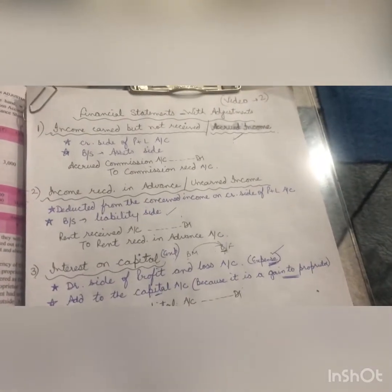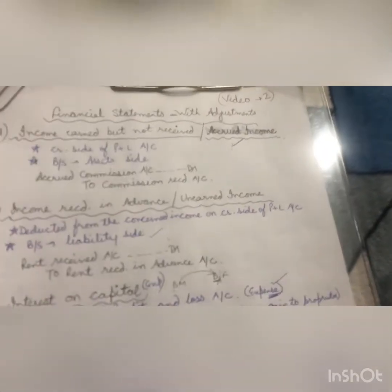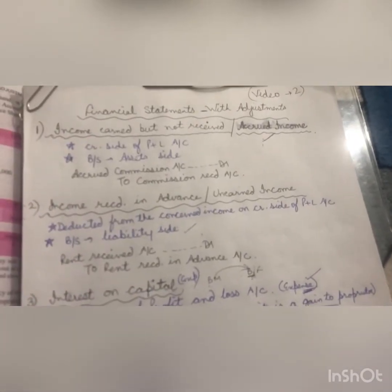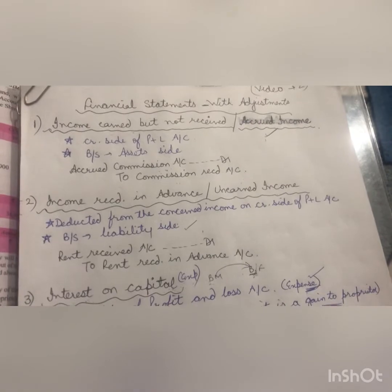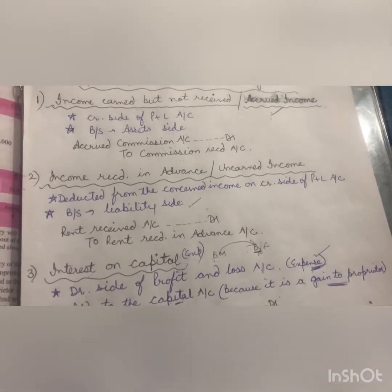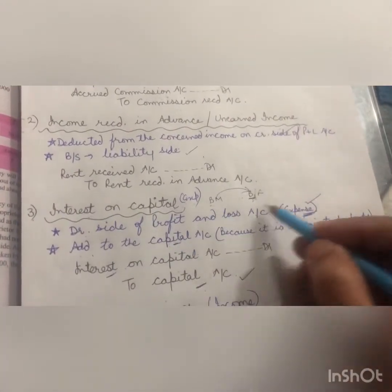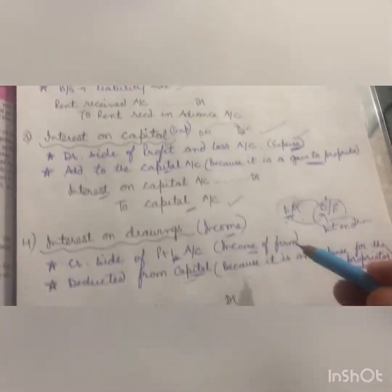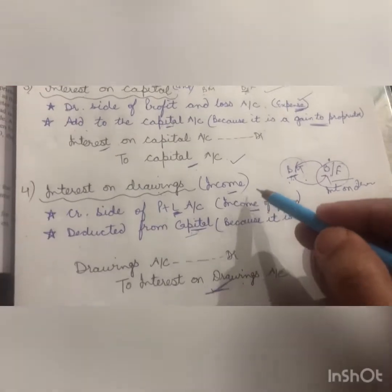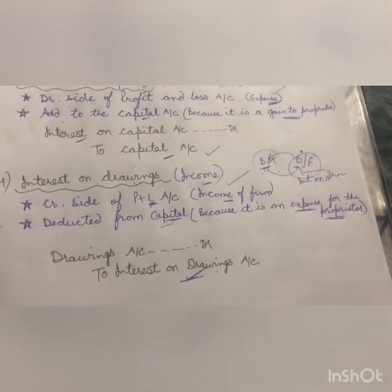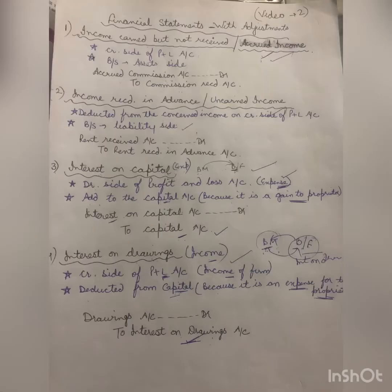So we have covered four adjustments: accrued income, unearned income (income received in advance), interest on capital, and interest on drawings. Now let us do a related question.